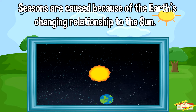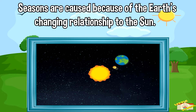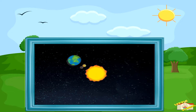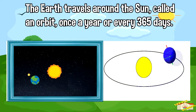Seasons are caused by the earth's changing relationship to the Sun. The earth travels around the Sun — this is called an orbit.